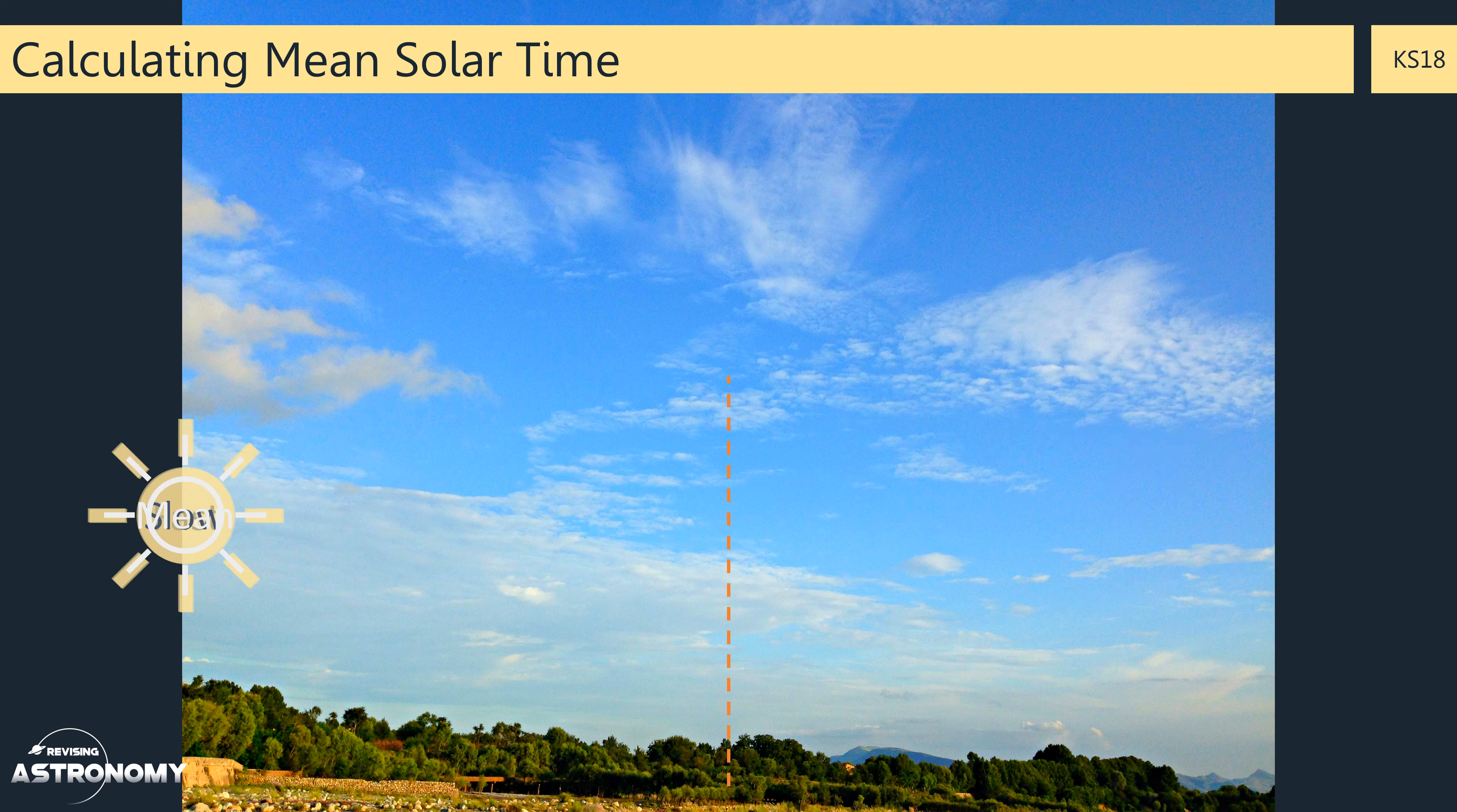So what do we do about this? Well, we use something called mean solar time, which is where the Sun would be if it were appearing to travel at a constant speed throughout the sky. And it's this mean Sun that we use to determine when midday is. And we call this the mean solar time.